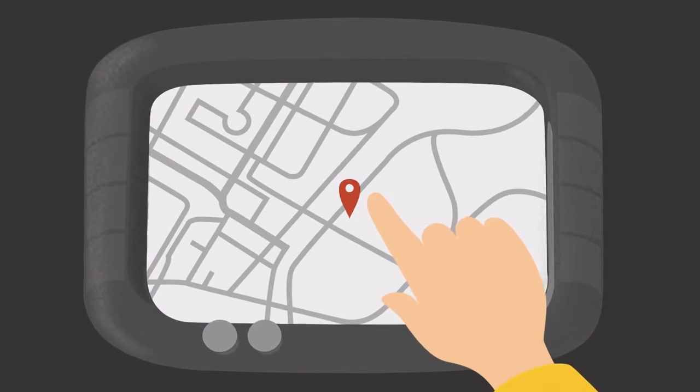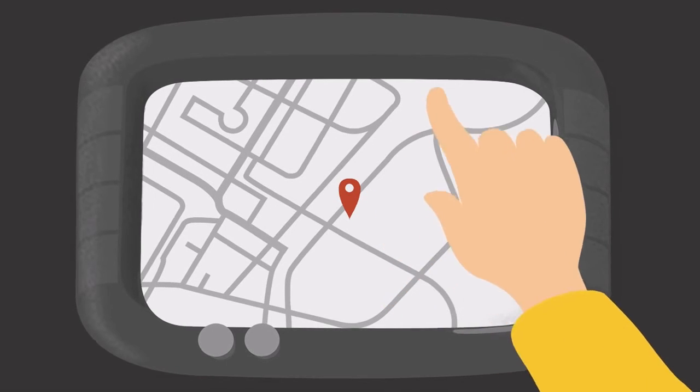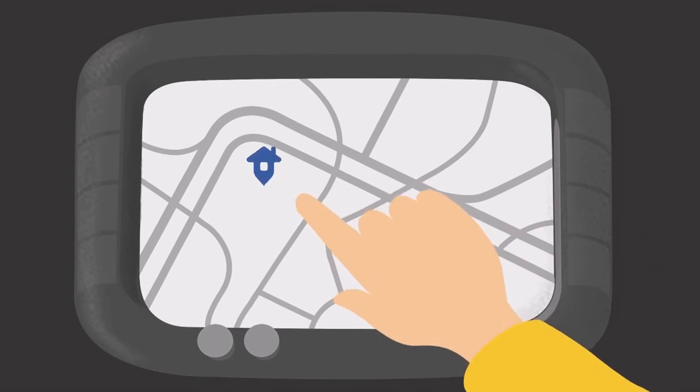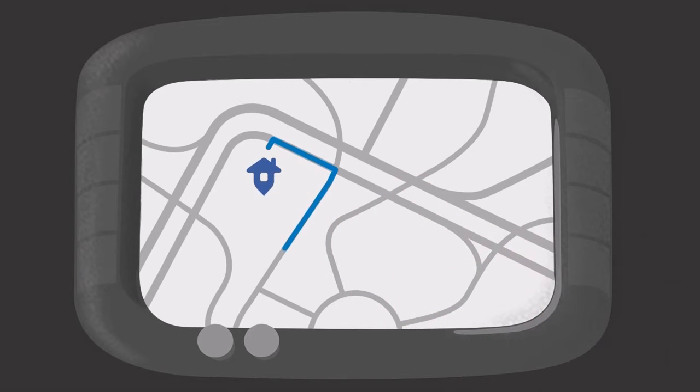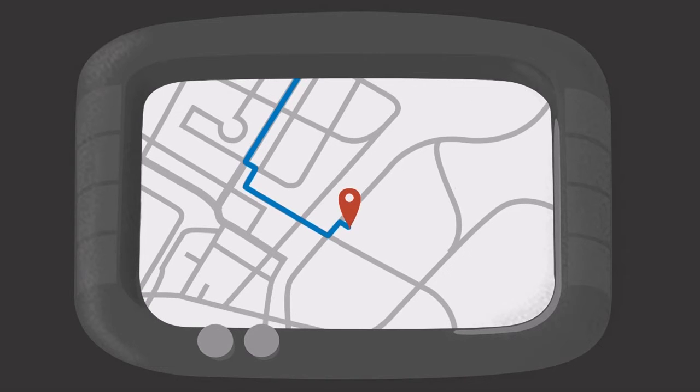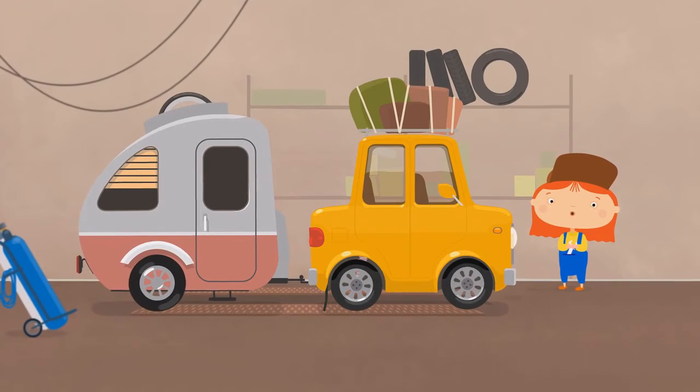The red sign shows where the car is. The grey lines show the roads. And this is how we select the place we want to go. Look! The navigator has drawn the route. It will tell the car where to turn.